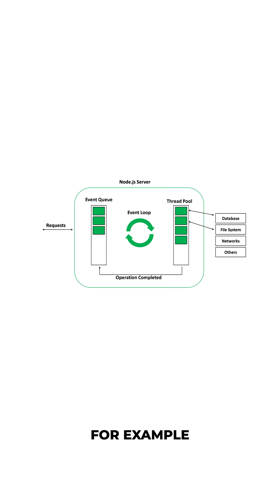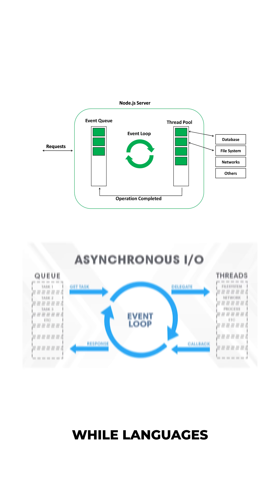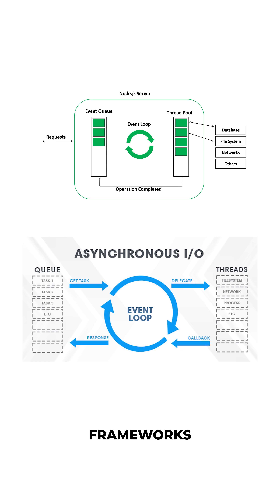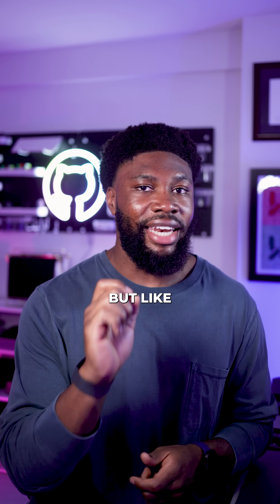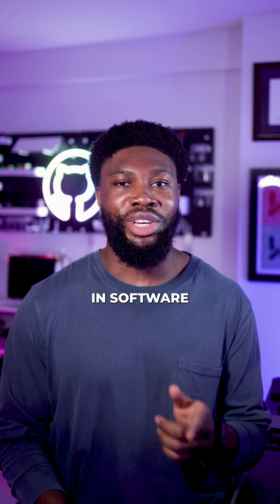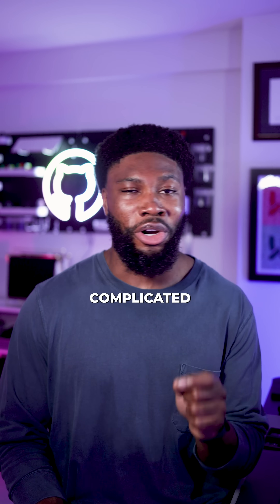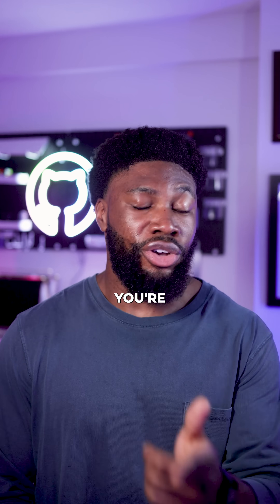For example, Node.js uses a single-threaded event loop, while languages like Java or Python might use thread pools or async frameworks that manage things differently. But like everything in software development, it can get a lot more complicated.